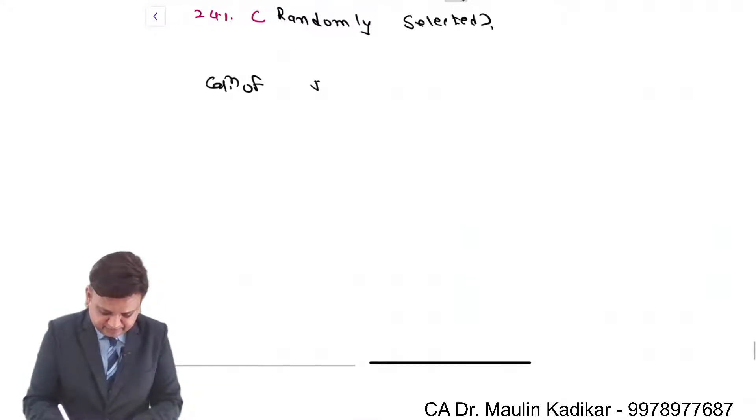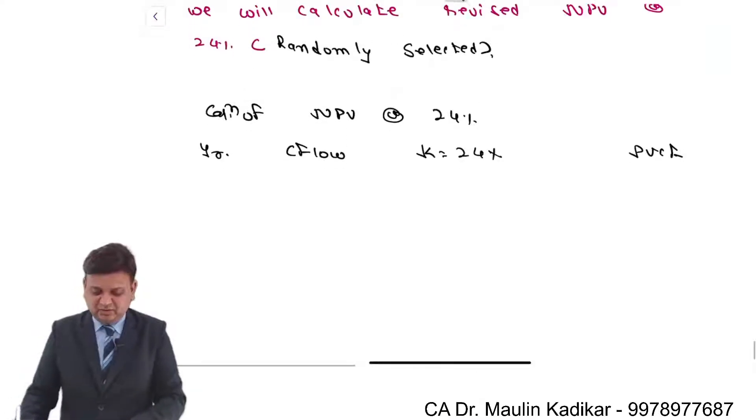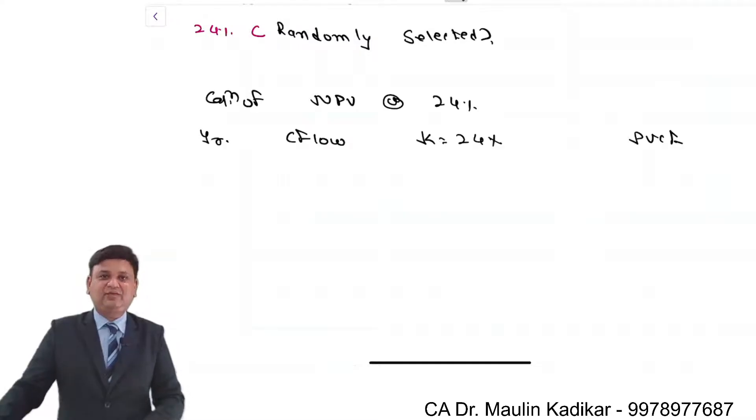So we will have the working like this. Calculation of NPV at the rate 24%. Column number 1 is year, column number 2 is cash flow, third column is 24% present value factor, present value cash flow, and with that NPV will be found.